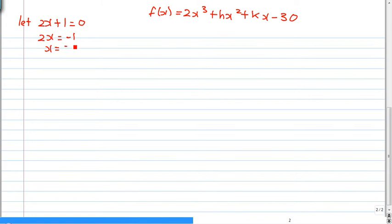What we do is we let 2x plus 1 equal to 0. For those of you who can't see the expression, let me just write down the expression again. f(x) equals to 2x cubed plus hx squared plus kx minus 30. In this case, 2x equals to minus 1, x equals to minus 1 over 2. f(-1/2) is equals to minus 21 according to the remainder and factor theorem.